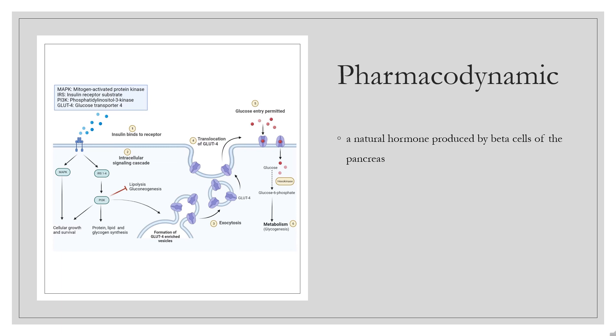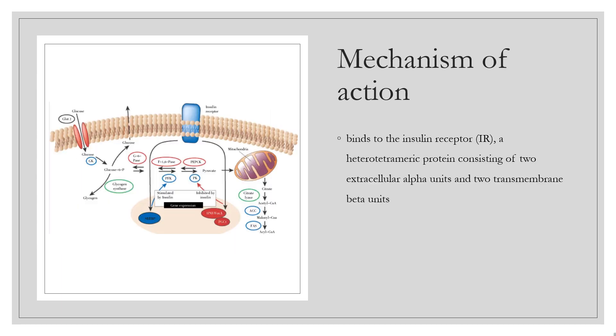Interestingly, it has a lower affinity, 30%, for the insulin receptor than human insulin. Mechanism of action: Insulin detemir binds to the insulin receptor (IR), a heterotetrameric protein consisting of two extracellular alpha units and two transmembrane beta units. The binding of insulin to the alpha subunit stimulates the tyrosine kinase activity intrinsic to the beta subunit of the receptor.